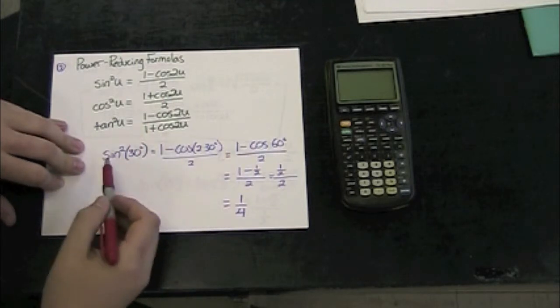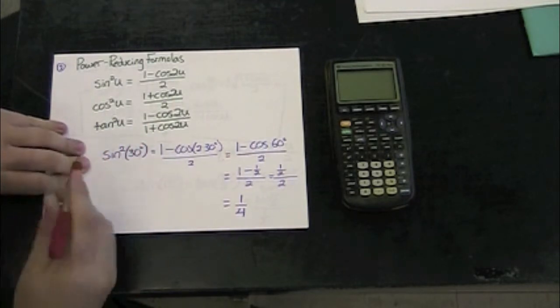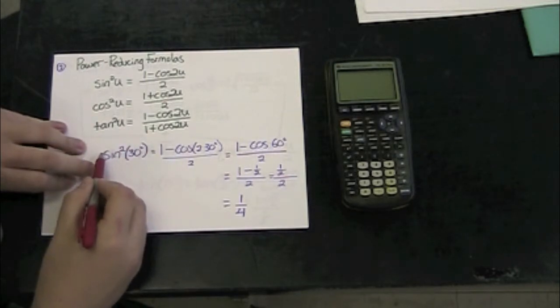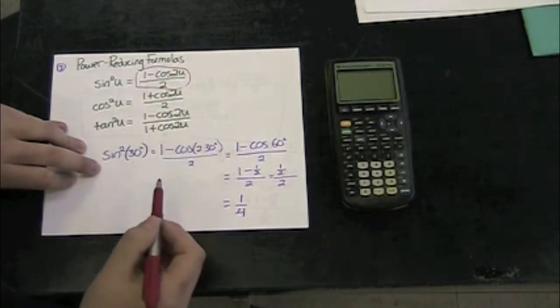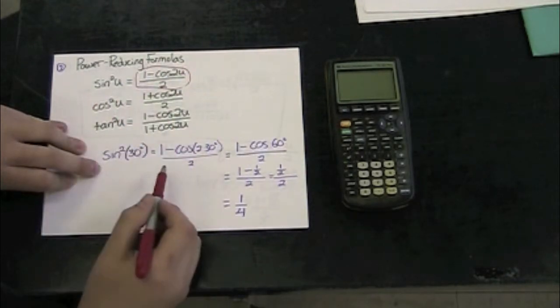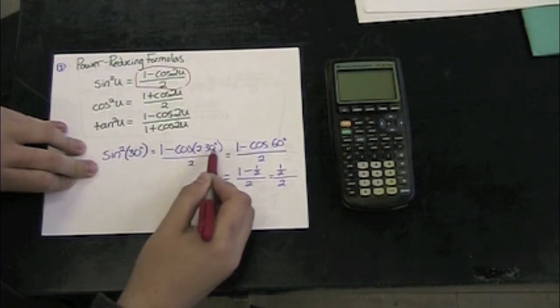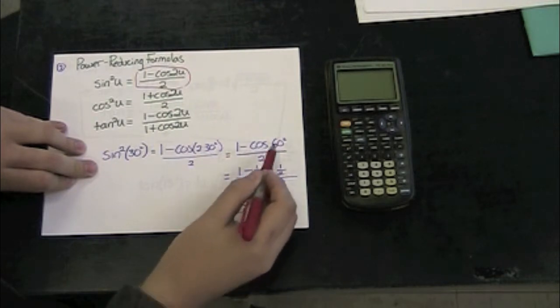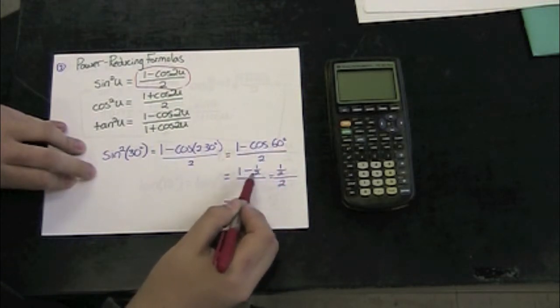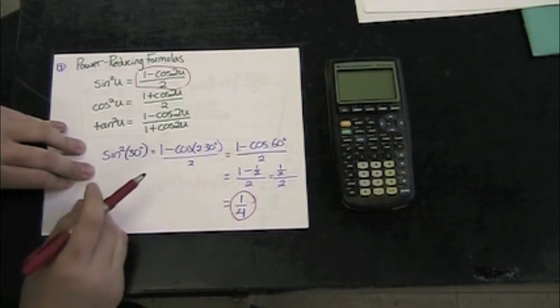And if we take a look at how one of these works, we can see how we can apply these to other situations. Here I have sine squared of 30 degrees. I can rewrite that using my sine squared formula. 1 minus cosine of 2 times 30 over 2. 1 minus cosine of 60 over 2. Cosine of 60 is a half, so I get 1 minus a half over 2. A half over 2, which equals 1 over 4.